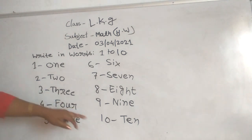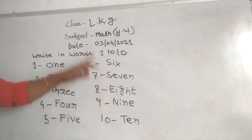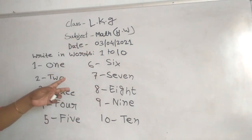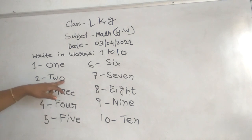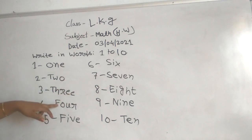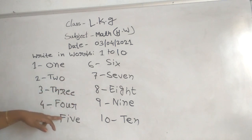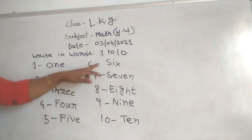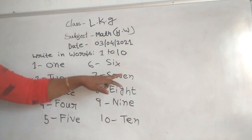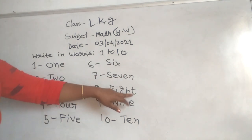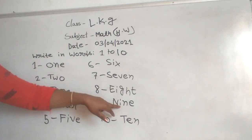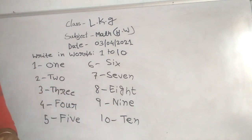1 to 10 spelling, link the other: 1 O-N-E, 2 T-W-O, 3 T-H-R-E-E, 4 F-O-U-R, 5 F-I-V-E, 6 S-I-X, 7 S-E-V-E-N, 8 E-I-G-H-T, 9 N-I-N-E, 10 T-E-N. Thank you.